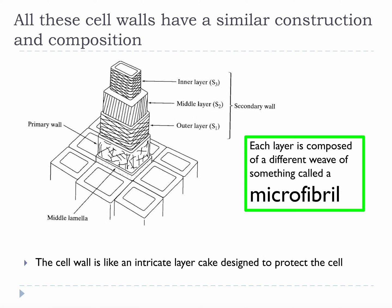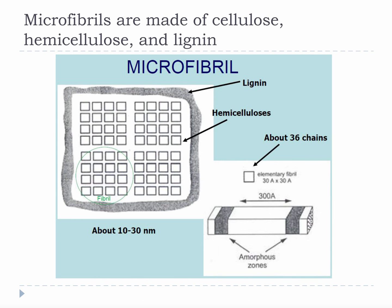The cell walls are made from different layers of something called microfibrils. The microfibrils are like tiny, tiny little composite fibers all woven together, and each layer of the cell wall contains a different weave. Given the weaving analogy, it's almost safe to say that a cell wall is like a cell's clothes and it layers those clothes to stay protected. The microfibrils are made of chemicals called cellulose, hemicellulose, and lignin. It is important that you can at least associate these chemical names with their presence in all plant life on Earth. The microfibrils are predominantly constructed of cellulose chains that are connected by hemicellulose and wrapped up by lignin.